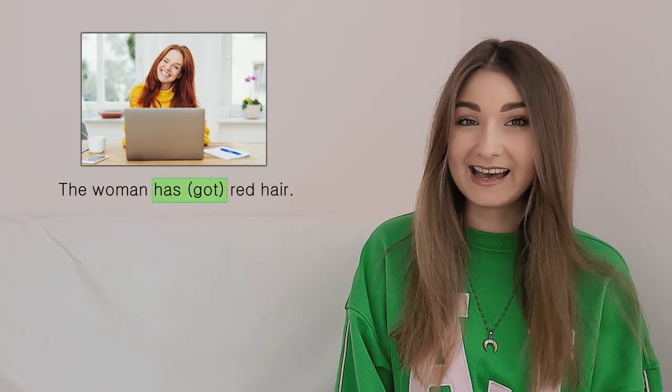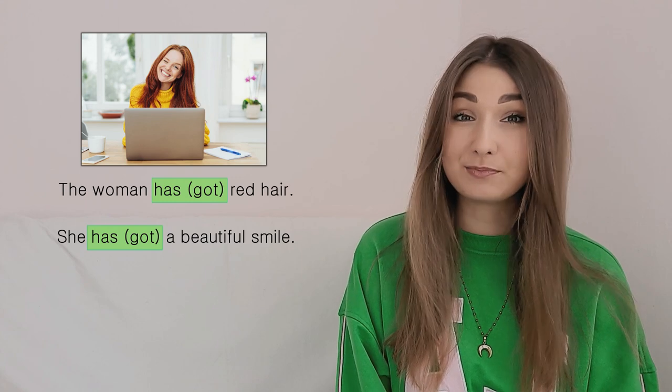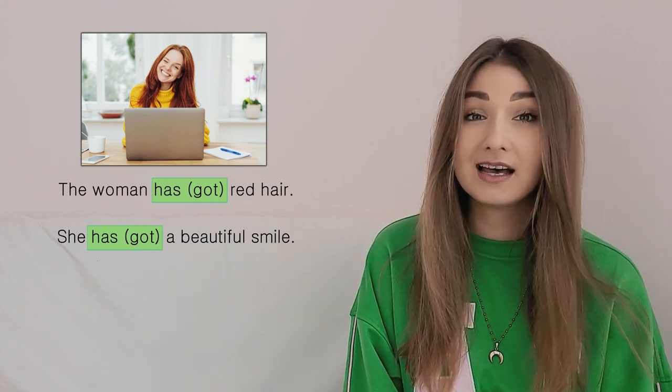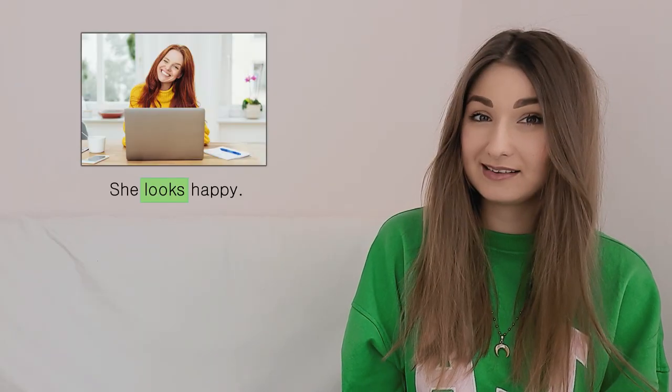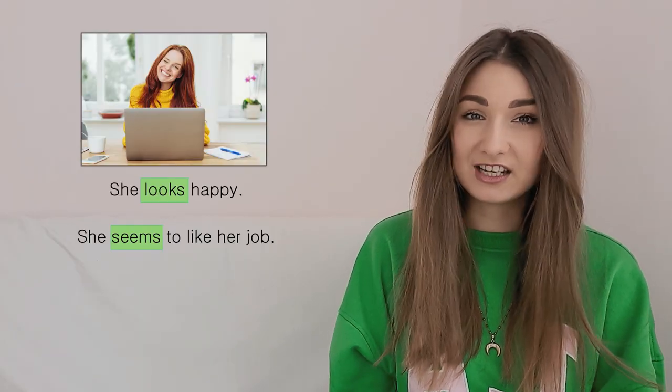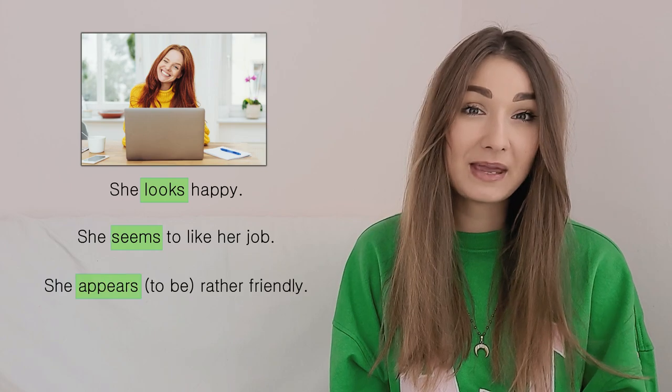If you want to describe someone's appearance, you should use the present simple tense: The woman has red hair. She has a beautiful smile. Her eyes are pretty. You should also use present simple when using state verbs such as look, seem, appear: She looks happy. She seems to like her job. She appears rather friendly. If you find the topic of state and action verbs confusing, I'll put the link to a related video in the description.